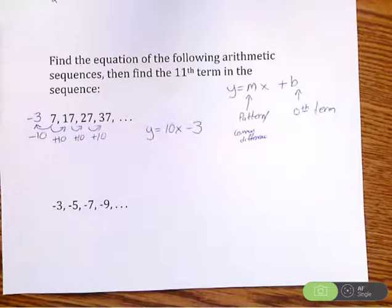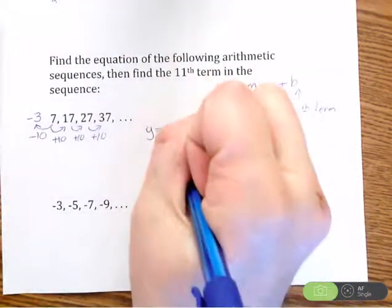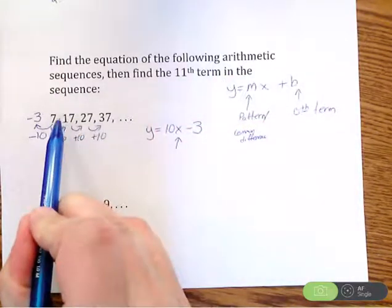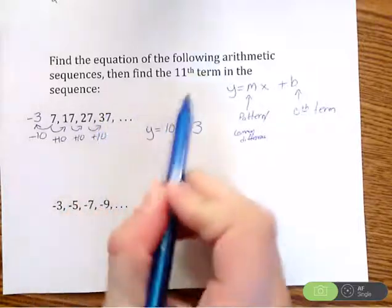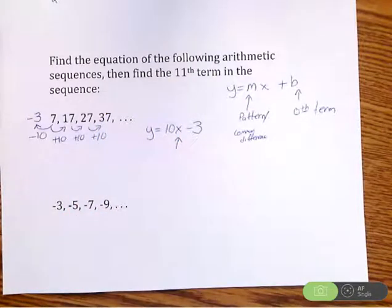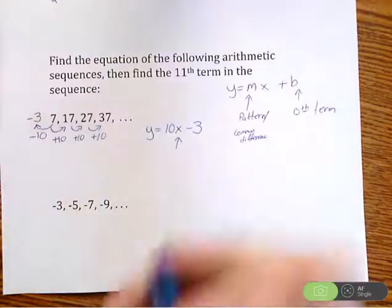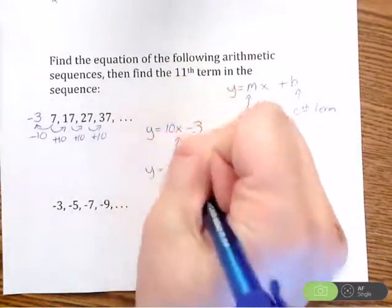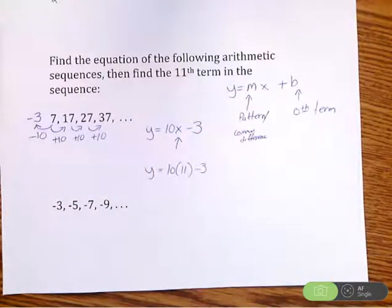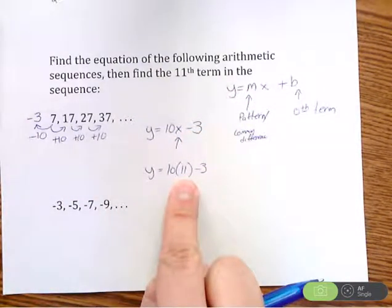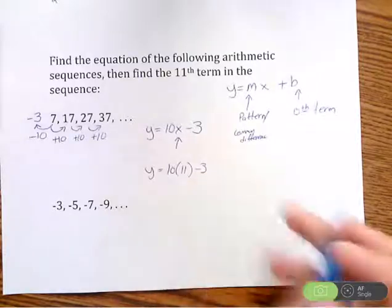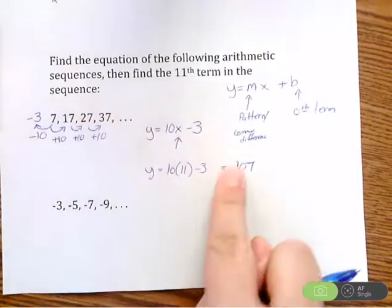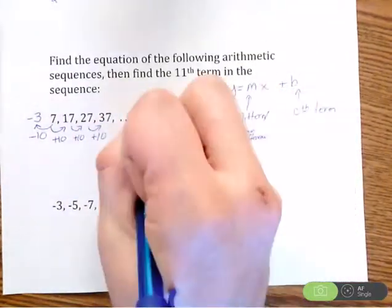The x represents the term number. If I want to find the 11th term, I plug 11 in for x: y equals 10 times 11 minus 3. That's 110 minus 3, which equals 107. The 11th term in this sequence is 107.